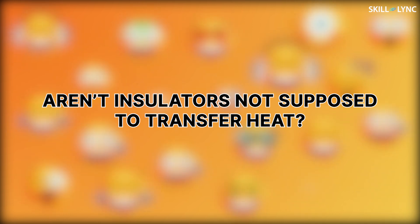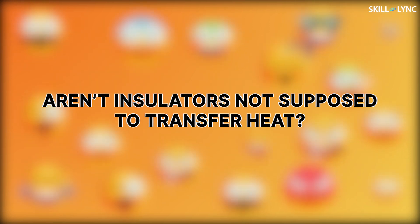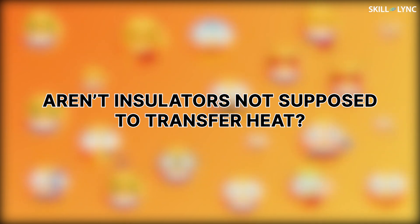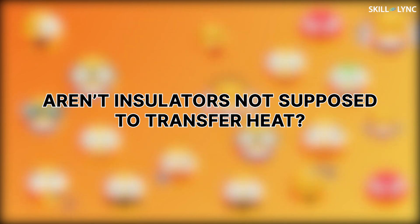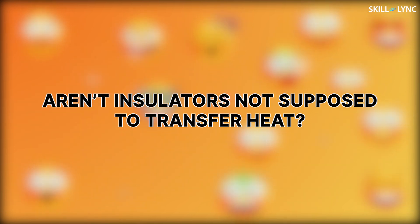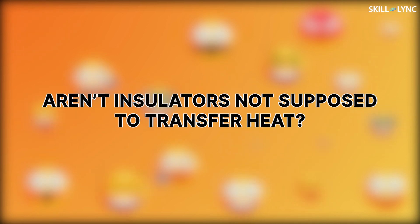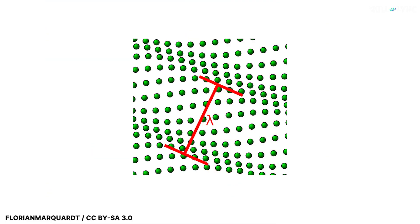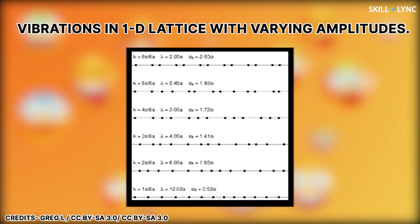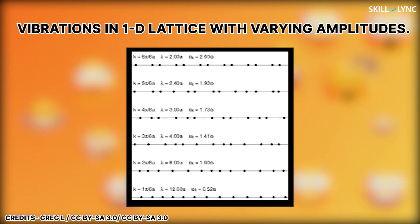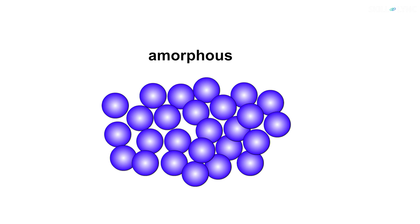A point of confusion is that aren't insulators not supposed to transfer heat at all? Objects which do not transfer heat at all are called perfect insulators, and that is a theoretical assumption. When heat is applied to solids, vibrations occur through the atoms in the lattice of the structure, and these vibrations are responsible for the transfer of heat through insulators. Since most insulators are amorphous in nature, the vibrations tend to scatter within the lattice, leading to bad conductivity.